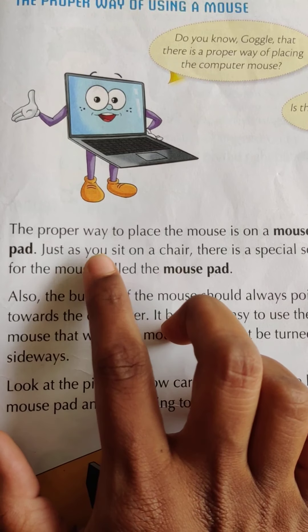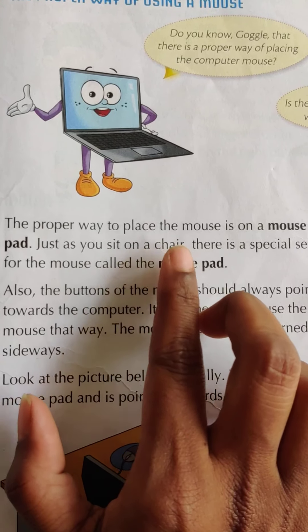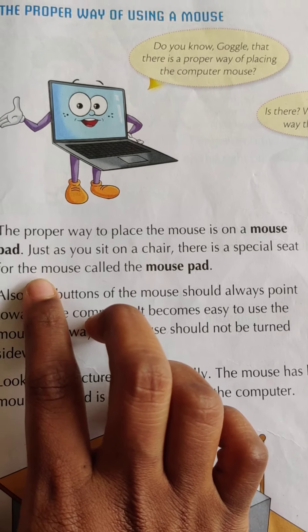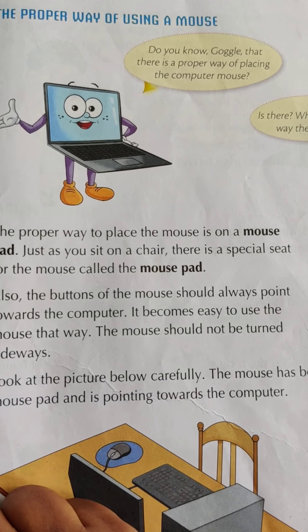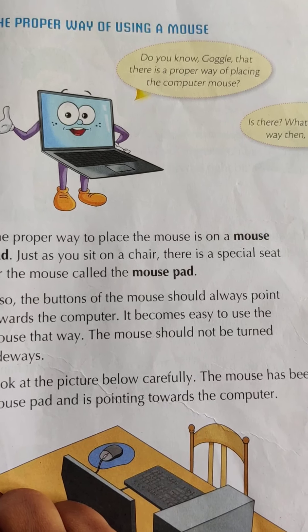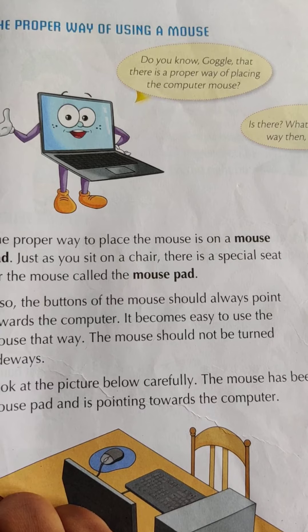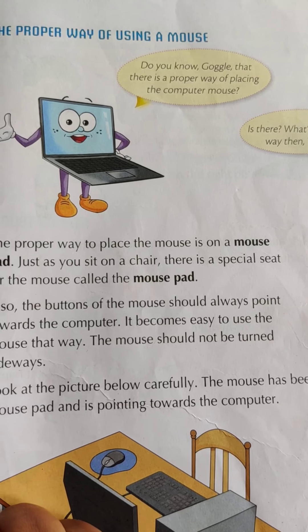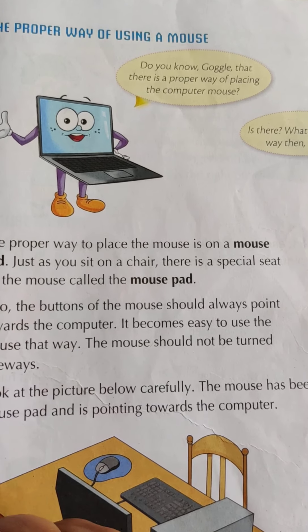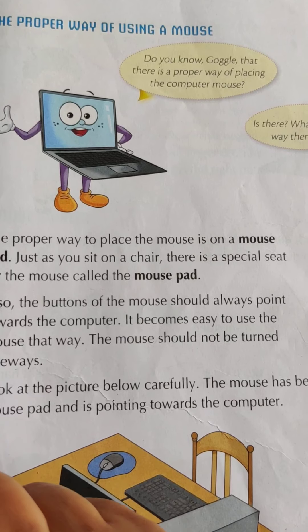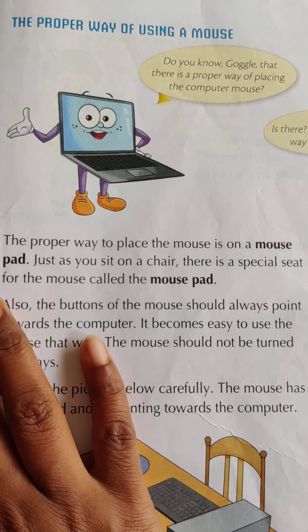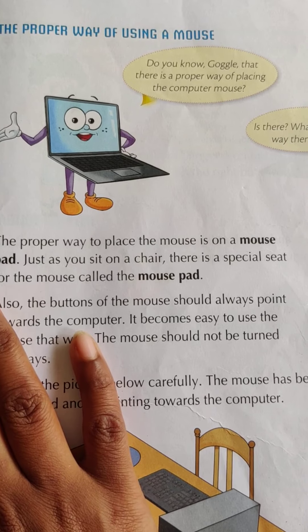Just as you sit on a chair, there is a special seat for the mouse called a mouse pad. The mouse has a special seat for working, and it is called the mouse pad.